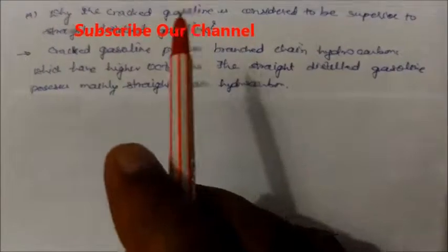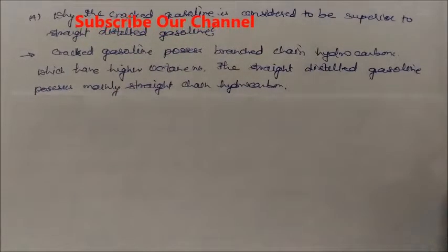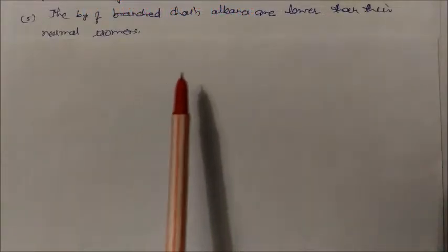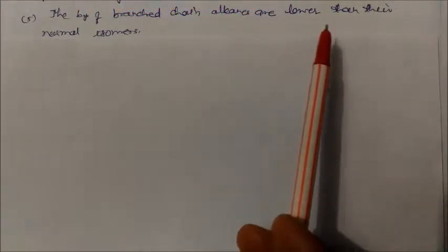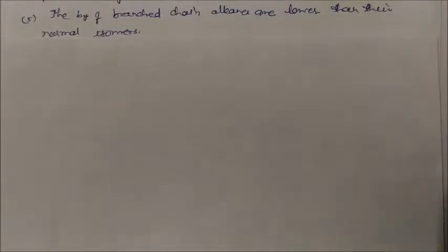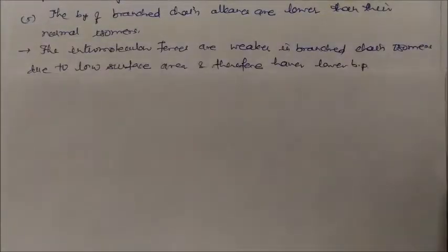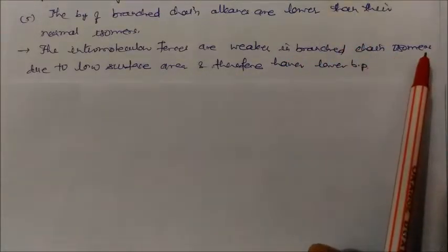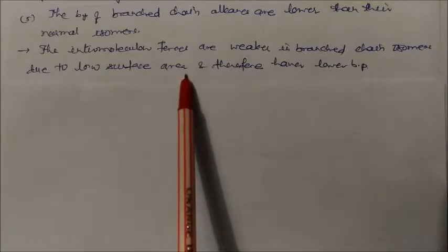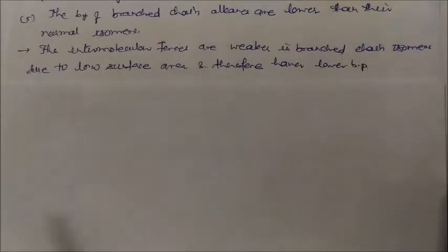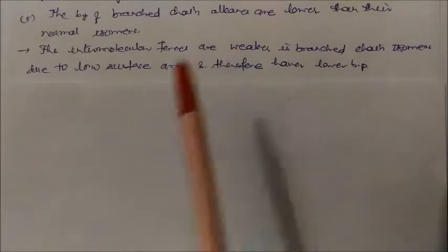The boiling point of branched chain alkanes is lower than their normal isomers. The answer is that intermolecular forces are weaker in branched chain isomers due to their low surface area. Because surface area is very low in branched chain isomers, they have a lower boiling point.